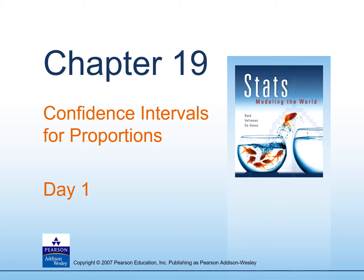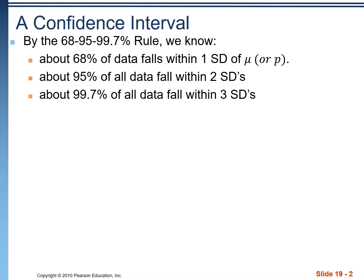In this chapter, we'll be creating something called a confidence interval. Thinking back to the empirical rule from unit one, we know that in a normal distribution, 68% of the data falls within one standard deviation of the mean or of the proportion. 95% falls within two standard deviations, and 99.7% within three standard deviations.